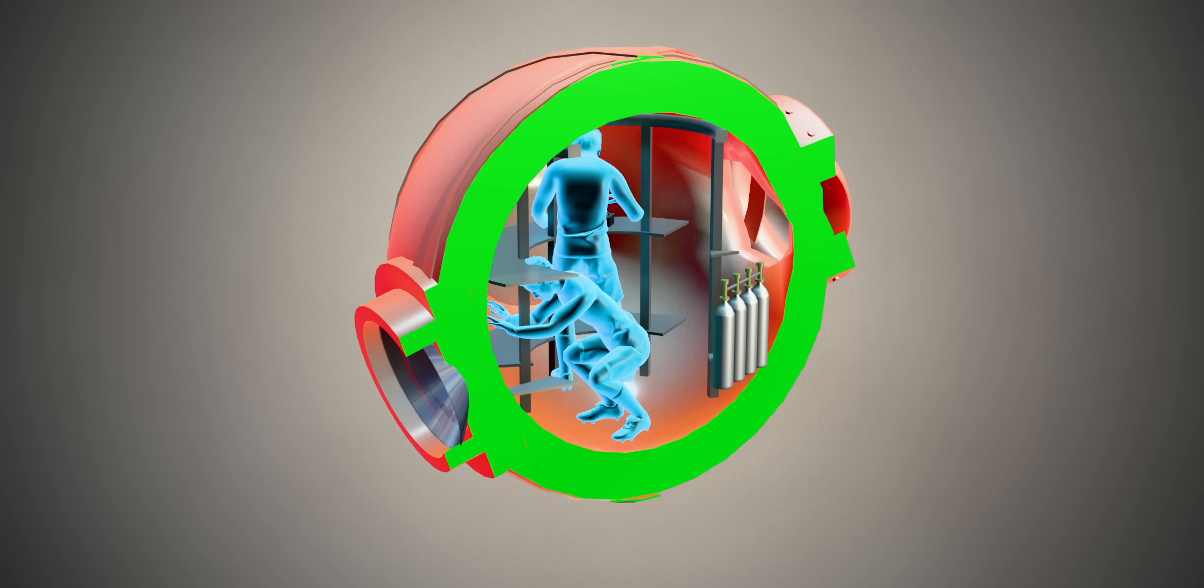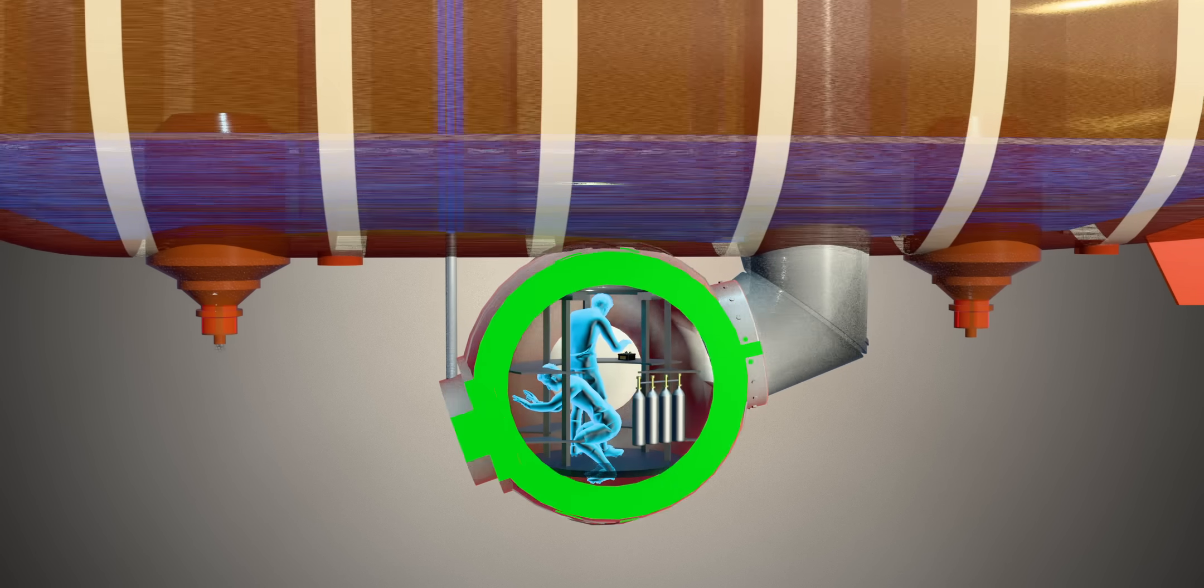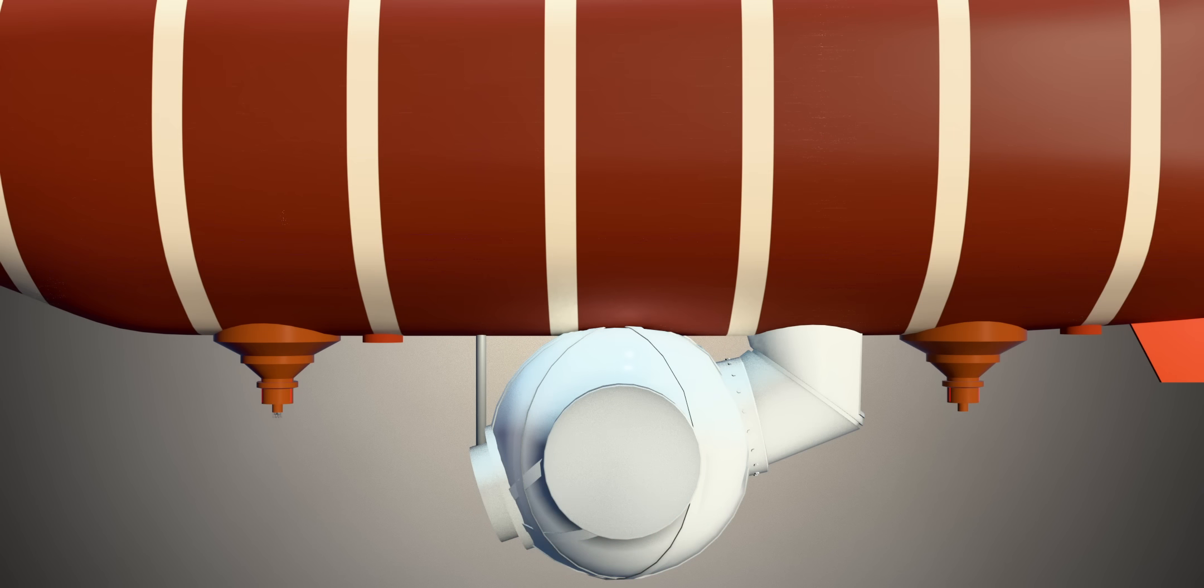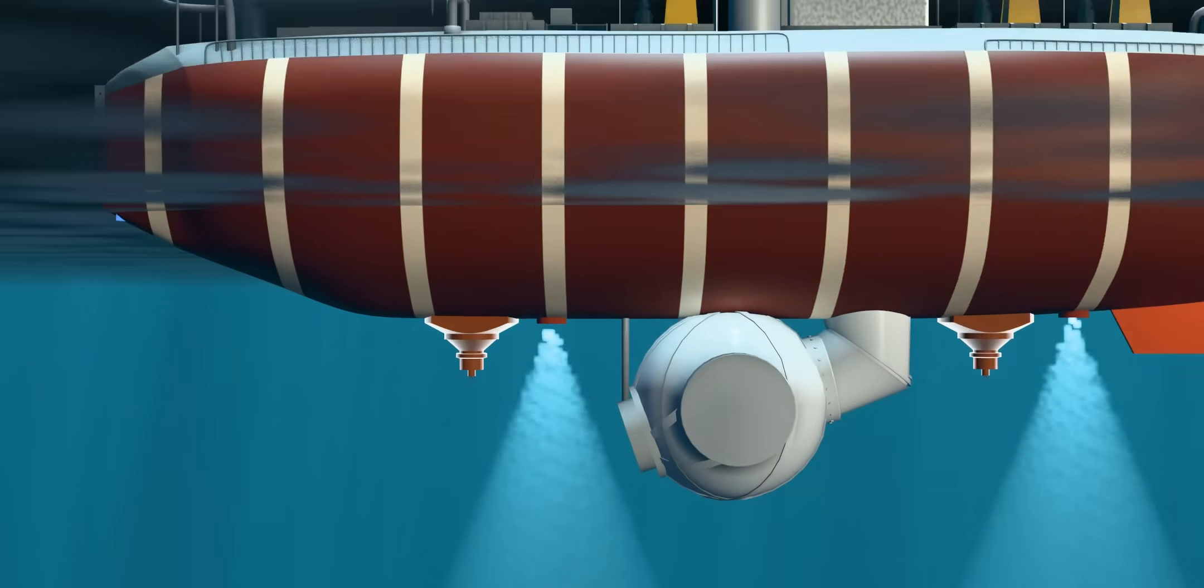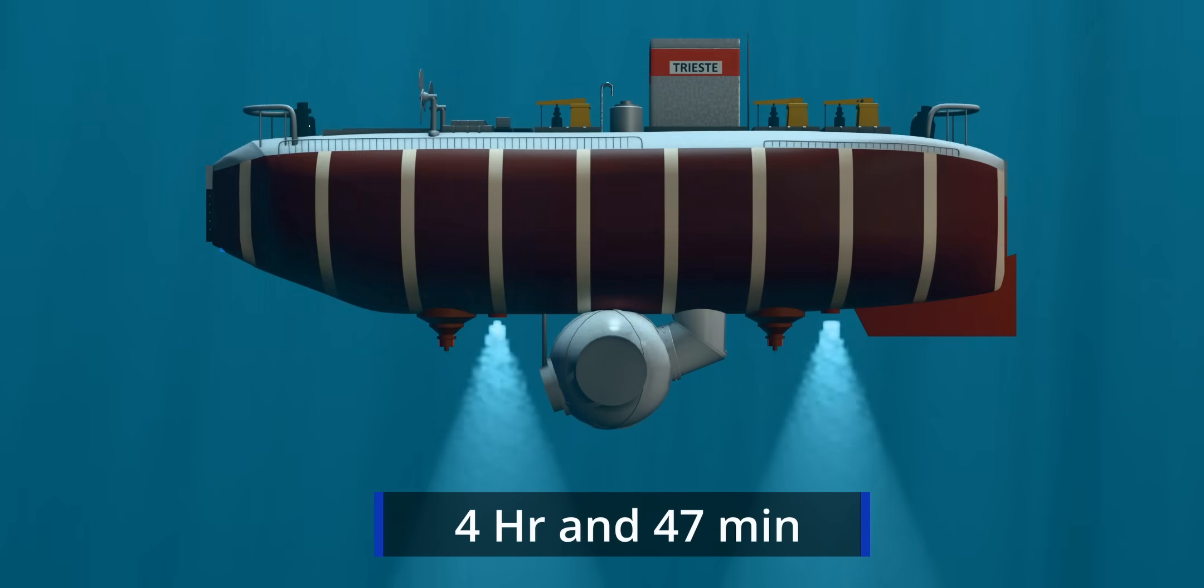To sink, the crew flooded the tanks and carried 9 tons of iron pellets held in two large hoppers by electromagnets. The descent took 4 hours and 47 minutes.